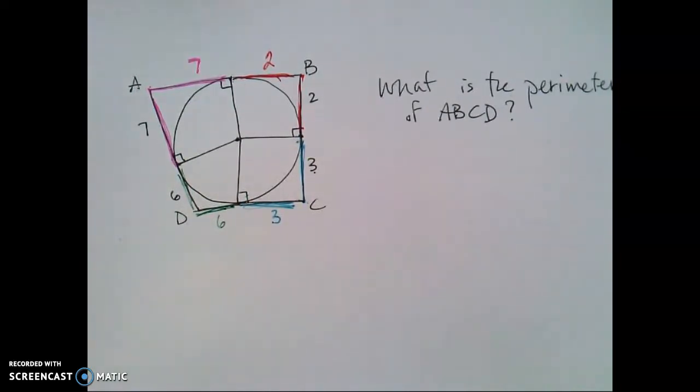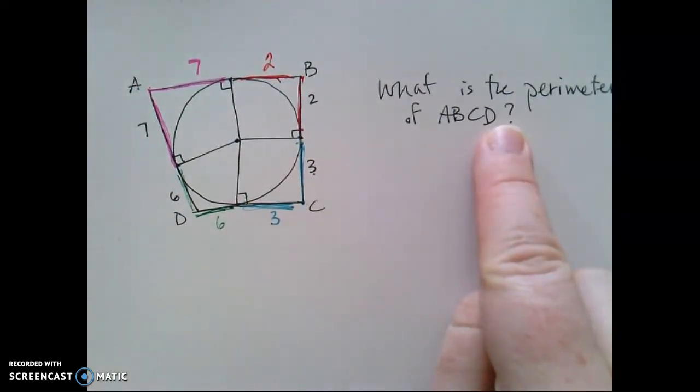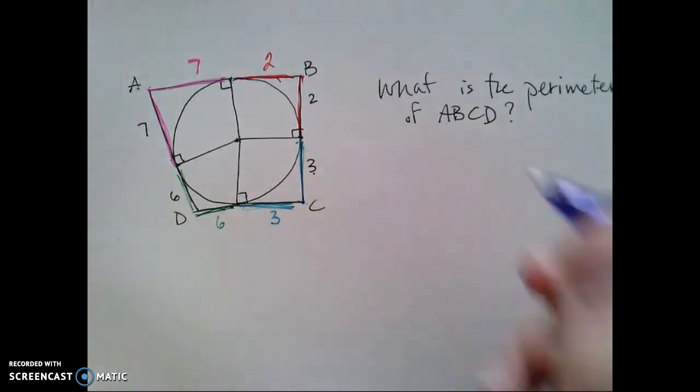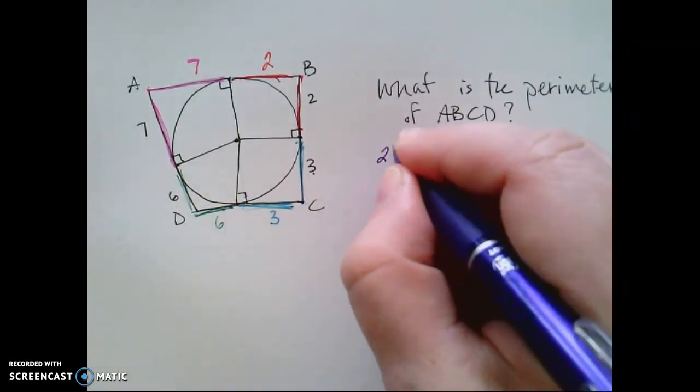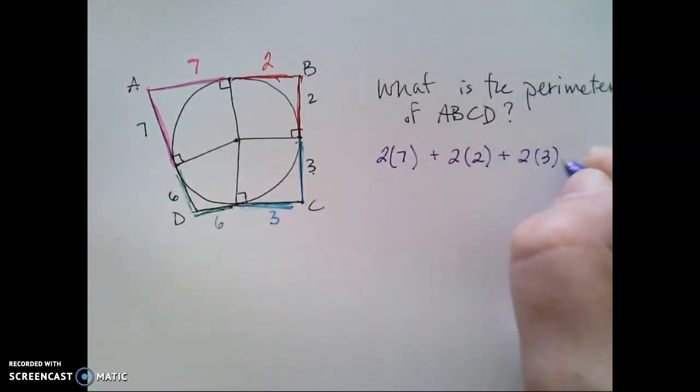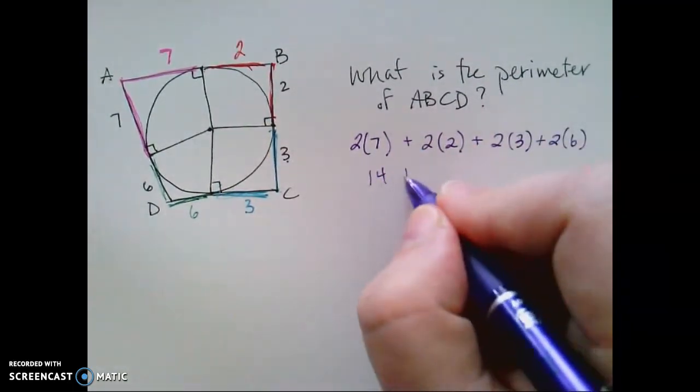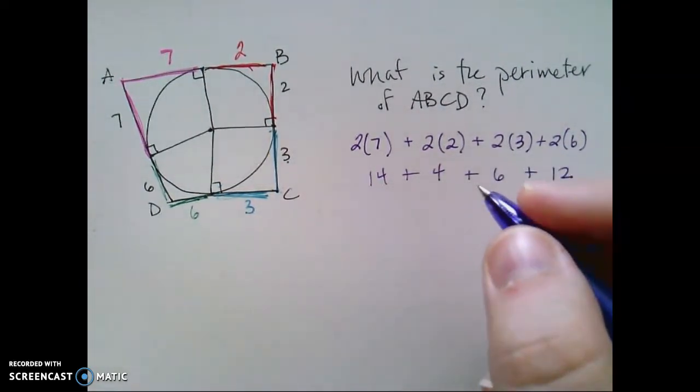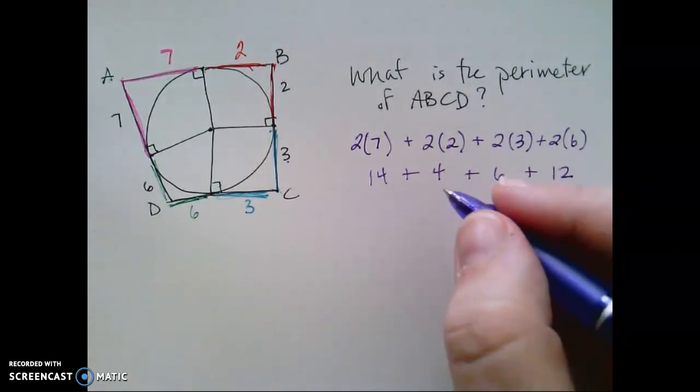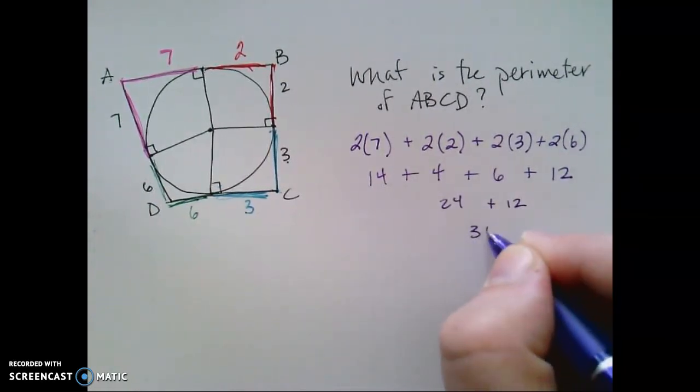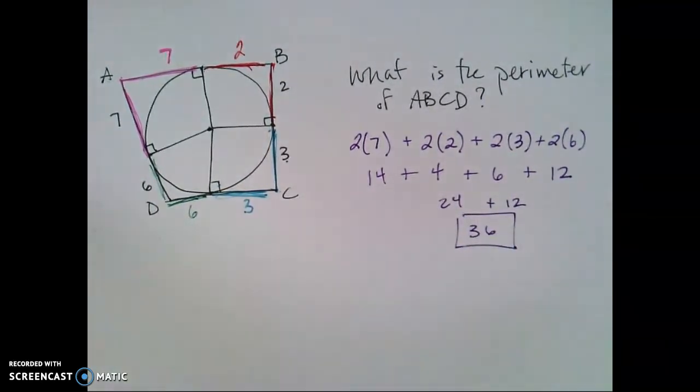So that's important to know as we go to answer the question. If I want to know what's the perimeter, I need to know the measure of each segment. So I'm going to add all those up. I've got two segments that are seven, two segments that are two, two segments that are three, and two segments that are six. So 14 plus four plus six plus 12 have to add to... 10, 24 plus 12, which is 36 units.